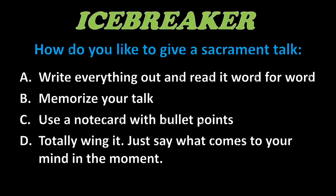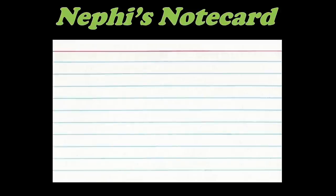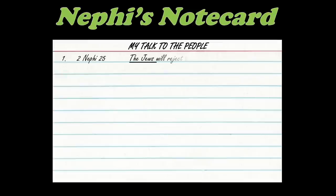As I was reading the Book of Mormon, I came to the realization that it's really a book of talks or sermons — a couple chapters of history, then a sermon, then more history, then another sermon. In 2 Nephi 25 through 30, Nephi is going to give a talk to his people. Since I like to use a note card with bullet points, I often wonder what the prophet's note card for this talk would have looked like.